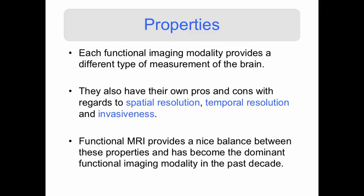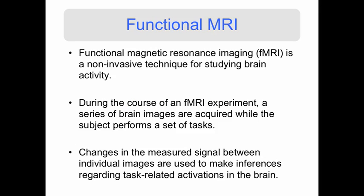fMRI, on the other hand, just uses large magnets, so it is considered non-invasive. Functional MRI provides a nice balance between these properties and has become the dominant functional imaging modality in the past decade.